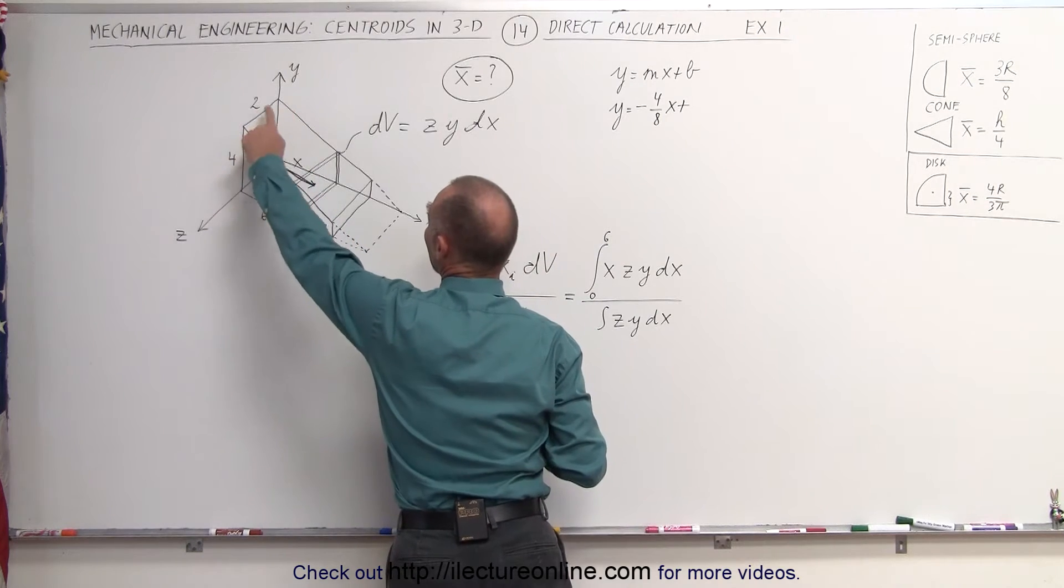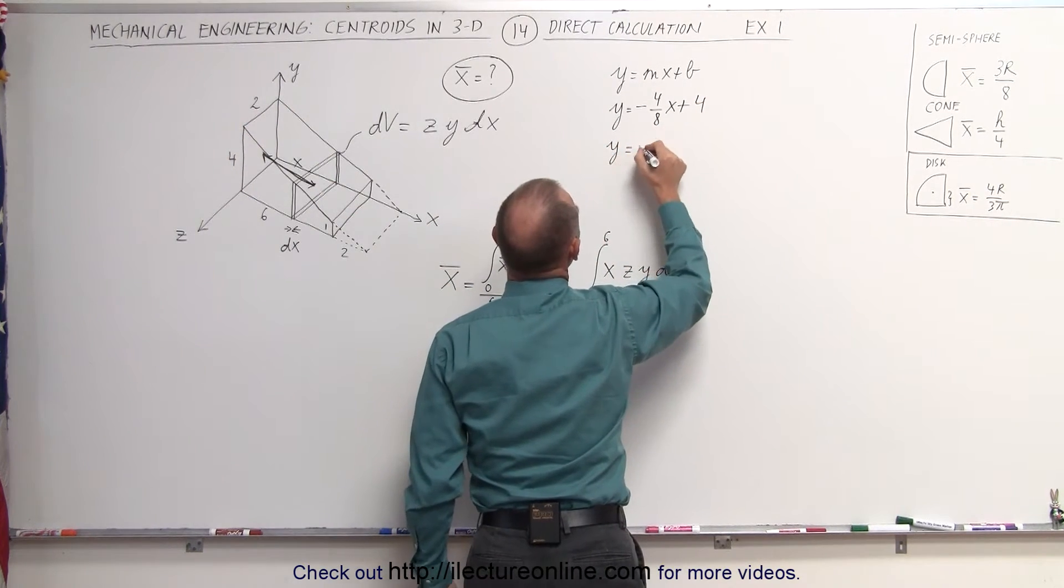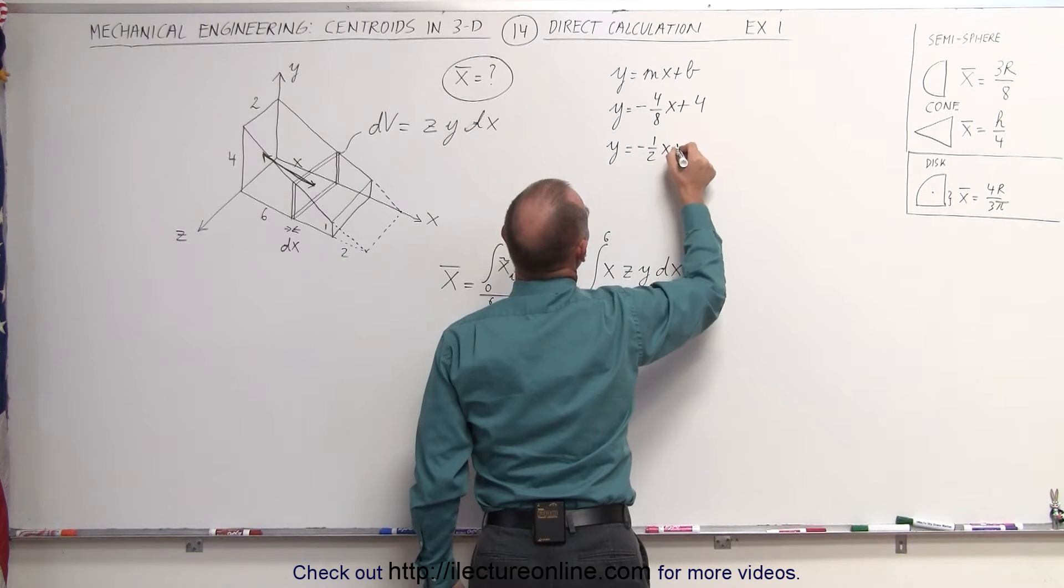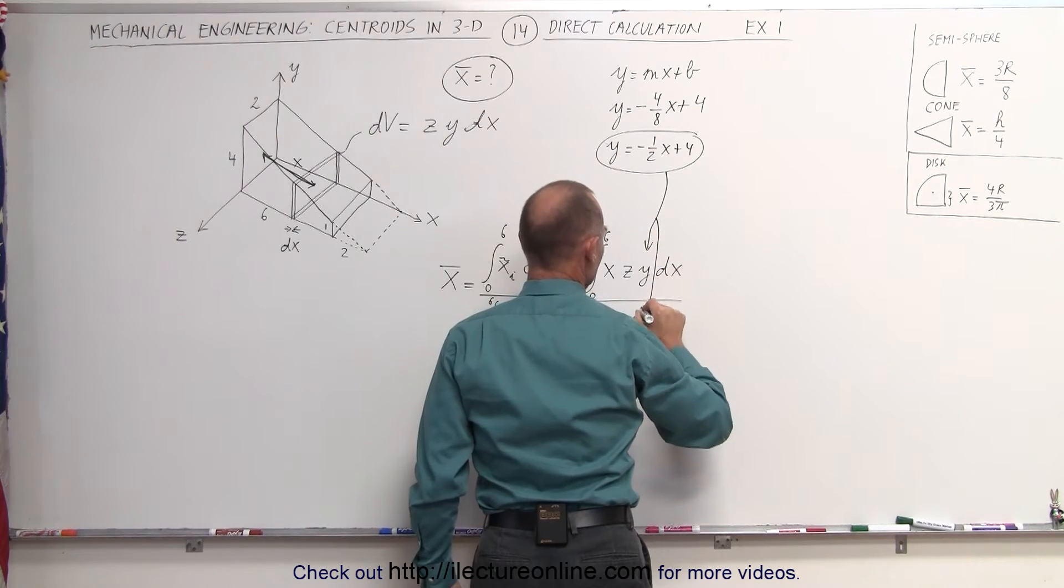and the y-intercept would be at y equals 4. So the equation becomes y equals minus 1 half x plus 4, which can be substituted into our equation here and here.